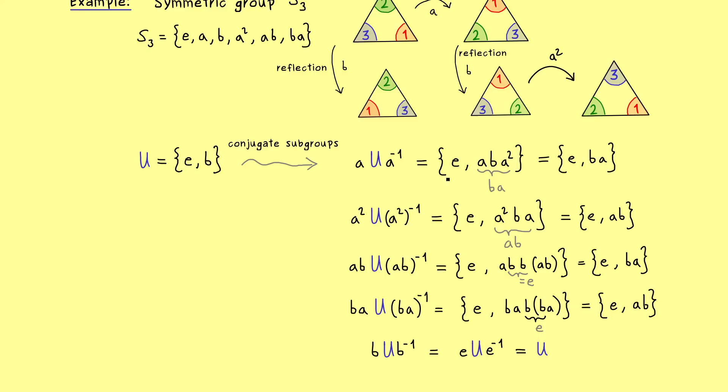Moreover you can also recognize that all these subgroups are more or less similar because they only consist of the identity element and a self inverse element. And exactly such a relation for conjugate subgroups we want to put in a general context.